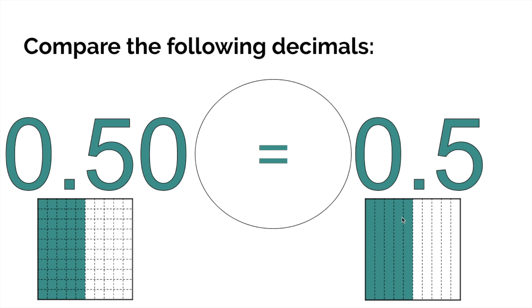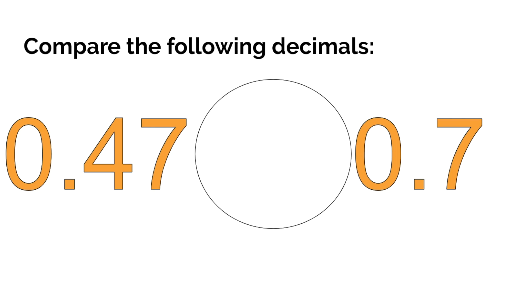See, some of y'all was about to jump into it's like, oh yeah, fifty's bigger than five. No, you need to stop it. Take it one step at a time. Let's try this one again, one step at a time. Ones place, they both got zero. Tenths place, four tenths, seven tenths. We're done.